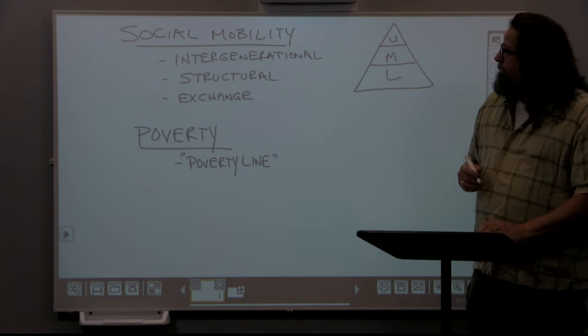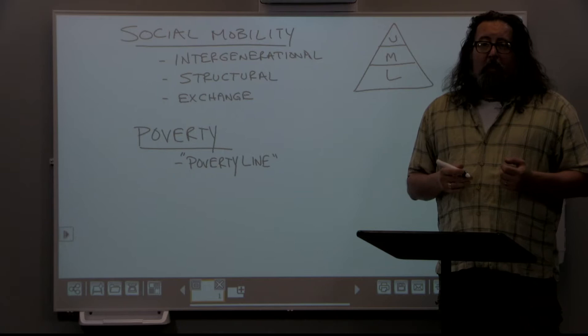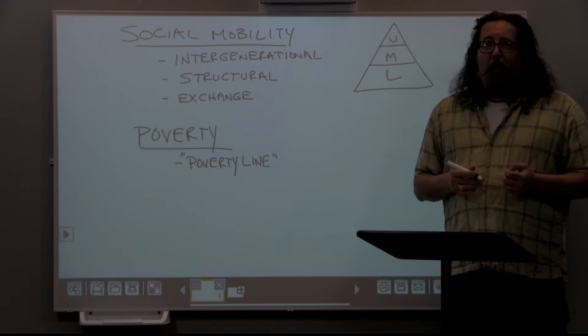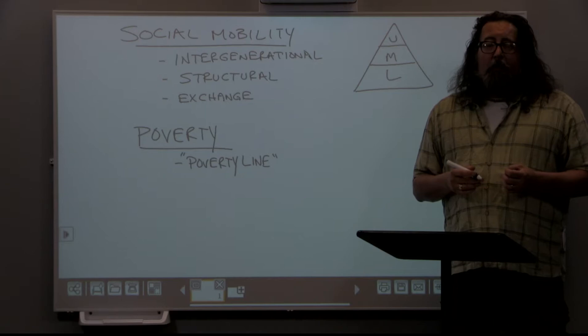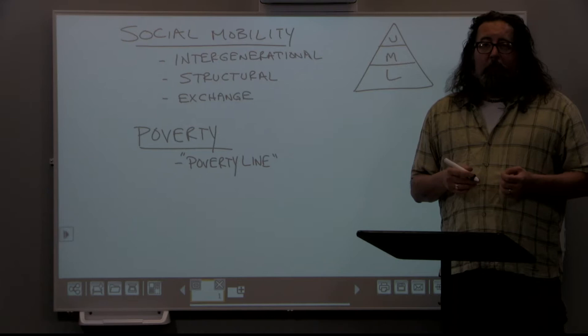We can also look at structural social mobility. This is the idea that sometimes society changes in dramatic ways, creating structural changes that affect people's social mobility both upward and downward. At a time when factory work was declining and American society was becoming more of an informational society, the advent of computers and word processing automated a lot of that work. Factory workers whose jobs were outsourced or eliminated experienced downward mobility, while those trained in computers experienced upward mobility.